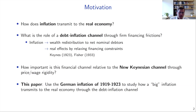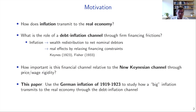In this paper, we think about how inflation — especially very high inflation — transmits to the real economy and what the relevant channels are. In particular, we want to think about the role of a financial channel we call the debt inflation channel, which operates through firm financing frictions. It is related to old ideas going back to Keynes and Irving Fisher: if you have unexpected inflation in the presence of nominal debt contracts, this leads to wealth redistribution to net nominal debtors.